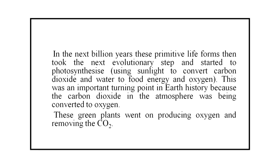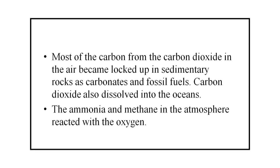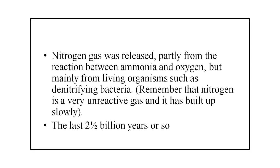In the next billion years, these primitive life forms took the next evolutionary step and started to photosynthesize — using sunlight to convert carbon dioxide and water to food energy and oxygen. This was an important turning point in Earth's history because the carbon dioxide in the atmosphere was being converted to oxygen. These green plants went on producing oxygen and removing carbon dioxide. Most of the carbon from carbon dioxide became locked up in sedimentary rocks as carbonates and fossil fuels. Carbon dioxide also dissolved into the oceans, and the ammonia and methane in the atmosphere reacted with the oxygen.